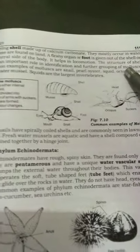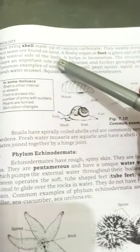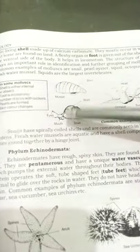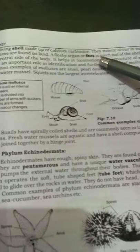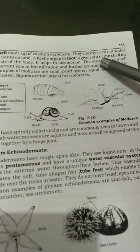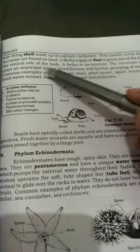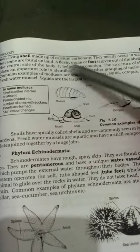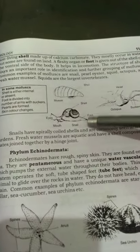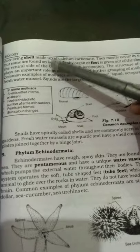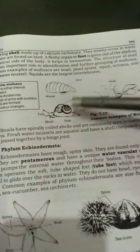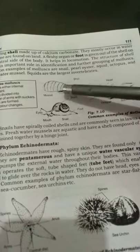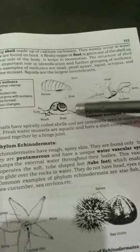These animals are normally found in water, but some like snails are also found on land. A fleshy organ called the foot extends out of the shell on the ventral side of the body, and it helps in locomotion — it enables the snail to move.